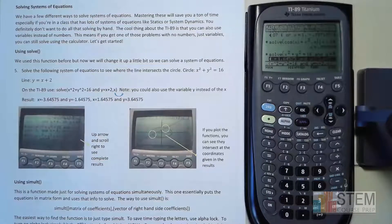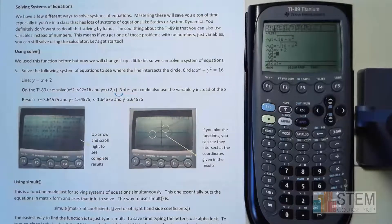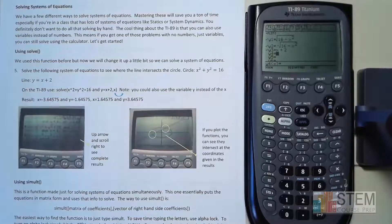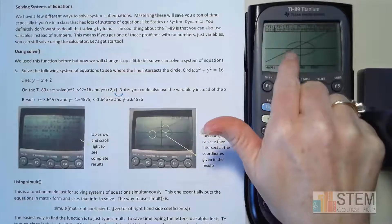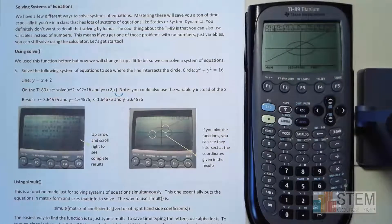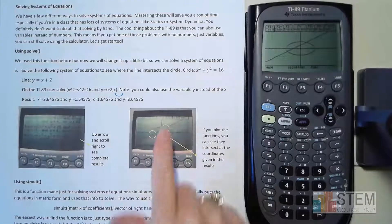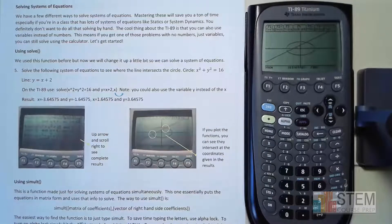Looking at the graph — I already have the circle equation solved for y and the line plotted together. The two intersection points are right where that line crosses the circle. Those coordinate values correspond to those two locations on the graph. It's an easy way to solve for multiple variables when given multiple equations.